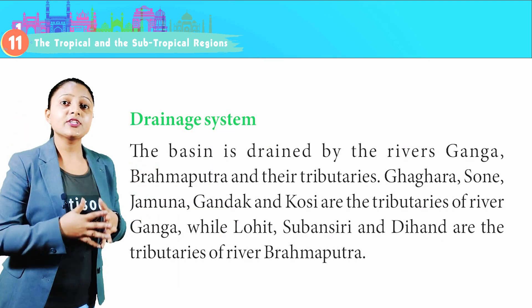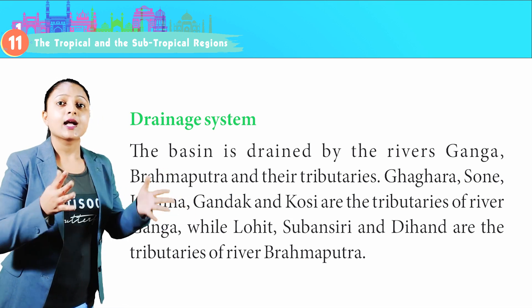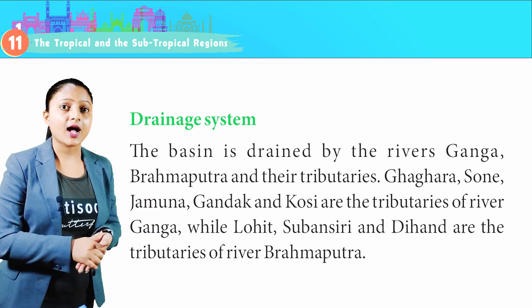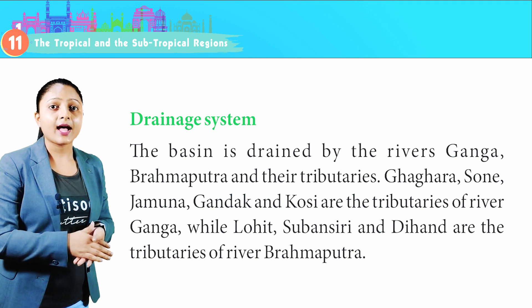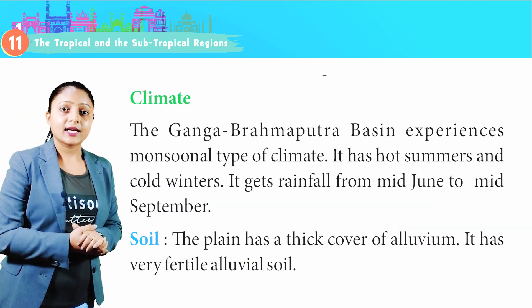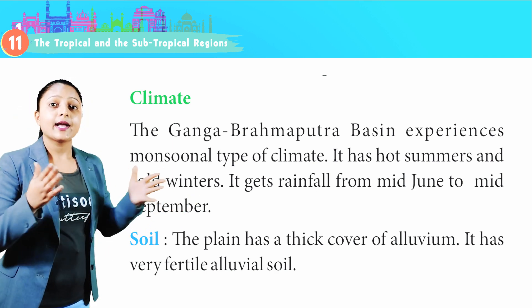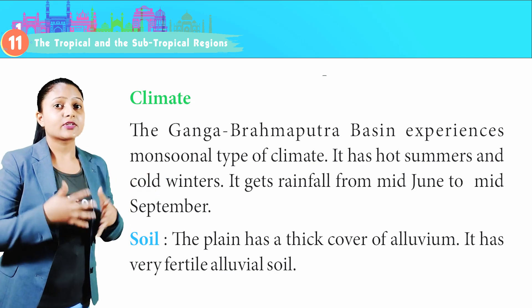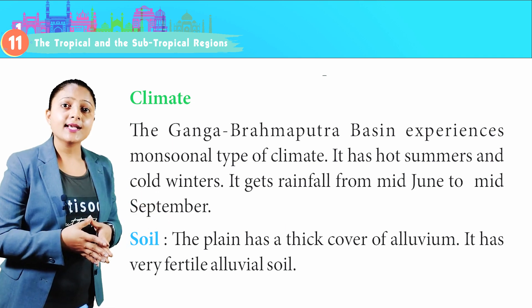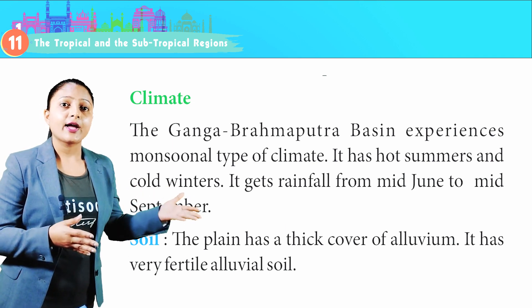Drainage System: The basin is drained by the rivers Ganga, Brahmaputra and their tributaries. Ghaghra, Son, Yamuna, Gandak and Kosi are the tributaries of river Ganga, while Lohit, Subansiri and Dehang are the tributaries of river Brahmaputra. Climate: The Ganga-Brahmaputra Basin experiences a monsoonal type of climate with hot summers and cold winters, receiving rainfall from mid-June to mid-September. The plain has a thick cover of alluvium with very fertile alluvial soil.